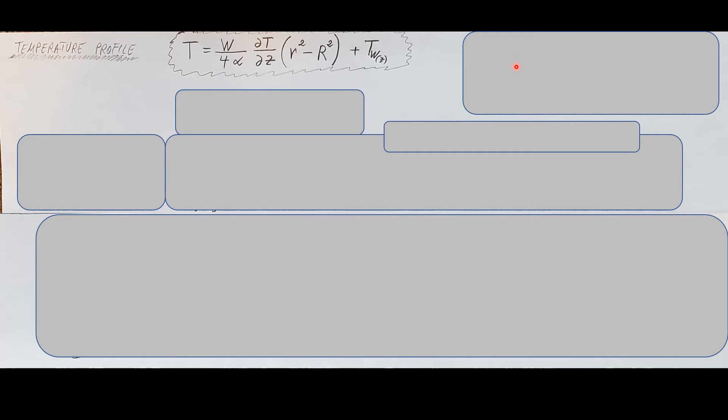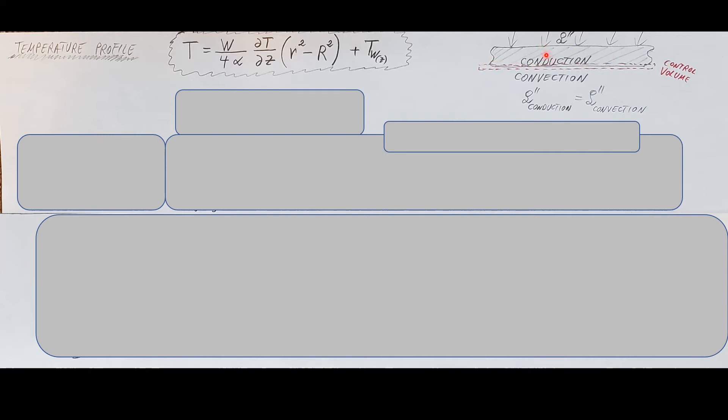Here I rewrote the temperature profile in a more compact form with constants factored out. To get to the Nusselt number, we set up a control volume at the edge of the pipe wall. On one side we have conduction, on the other convection. The flux coming in via conduction equals the flux going out via convection. So we write: convection on the left equals conduction on the right, where the derivative is evaluated at r = R, right at the wall.